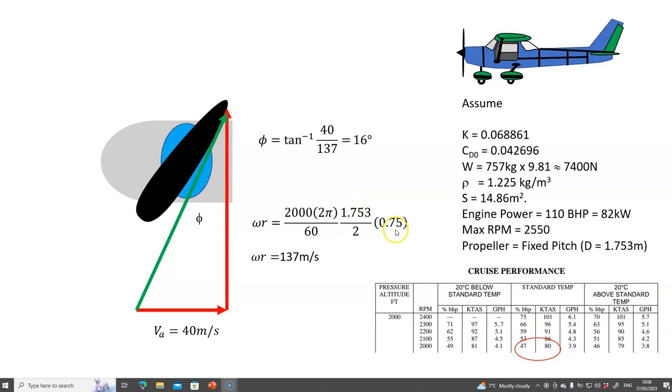This 80 or 82 knots is approximately 40 meters per second. If I use those figures, the angle of advance is the inverse tan of 40 over 137, and that gives me approximately 16 degrees.